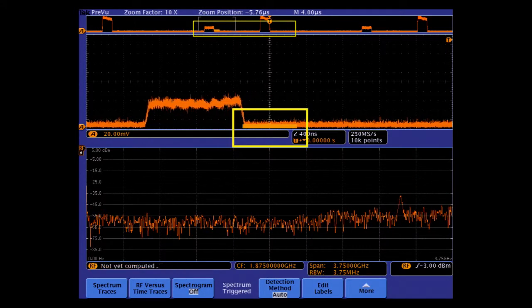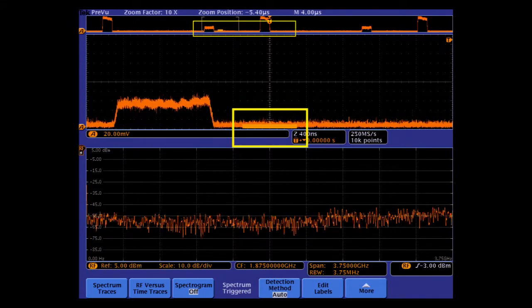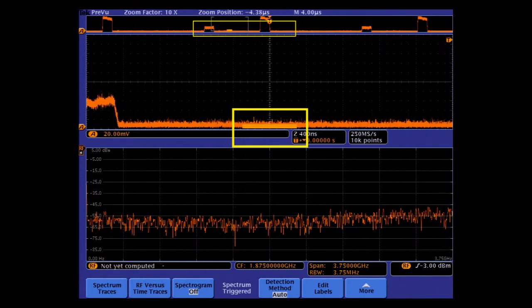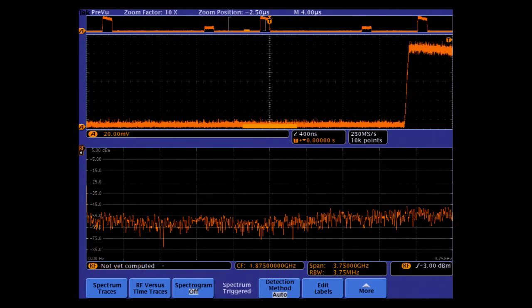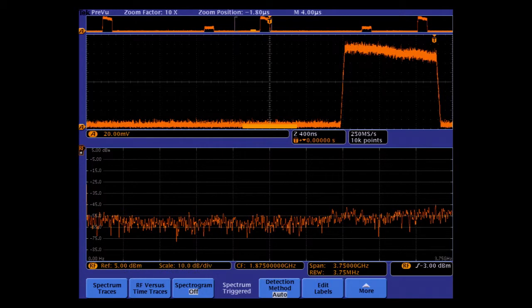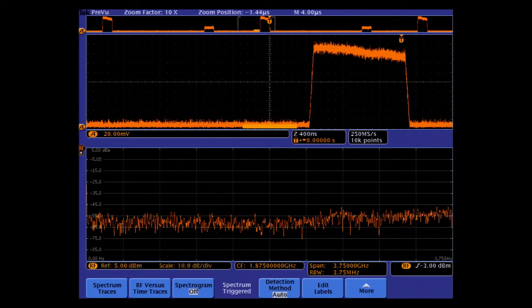Just below that is the zoomed amplitude versus time trace and the spectrum is at the bottom. The spectrum time can be seen on the lower portion of the amplitude versus time displays, shown by the moving short orange bar. This is the time period corresponding to the spectrum view.